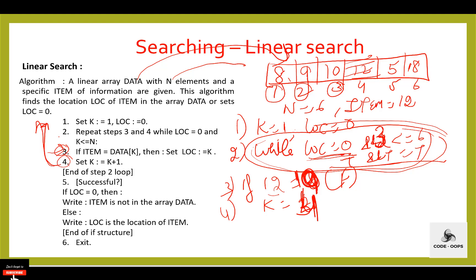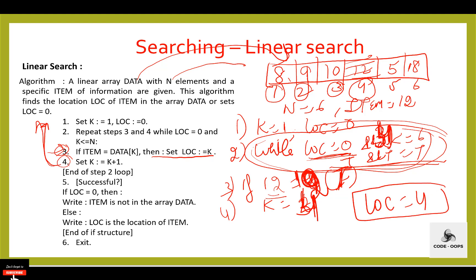Control transfers back to step 2: repeat steps 3 and 4 while loc equals 0 and k is less than or equal to n. loc equals 0 and k is 4, and 4 is less than or equal to 6 — condition is true. Execute step 3: item is 12 and data[k] is also 12 — condition is true. Set loc equal to k, so loc becomes 4. Then k equals k plus 1, k becomes 5. Now in step 2, loc is not 0, so the condition becomes false and false — result is false.